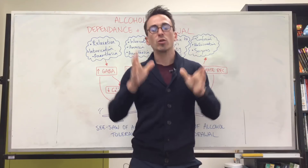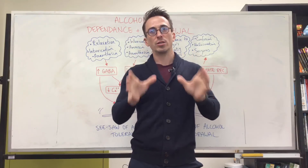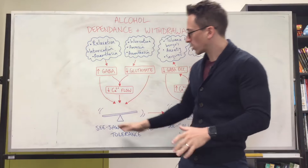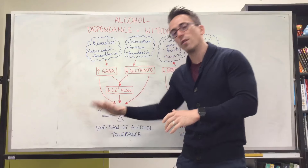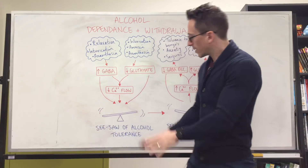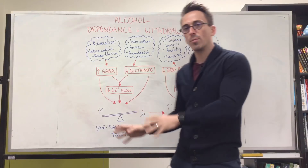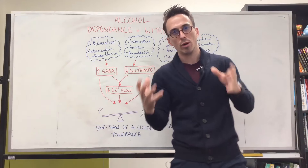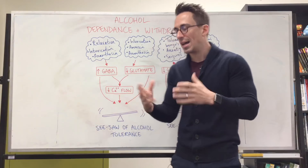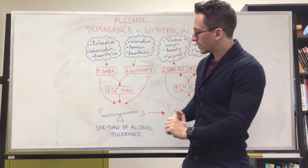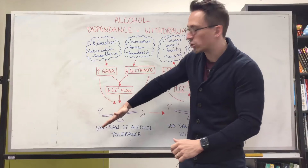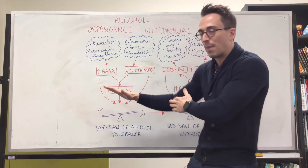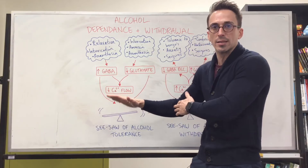Now let's talk about what alcohol does to our body. What I've drawn up here is something called the seesaw of alcohol tolerance. Basically the seesaw is homeostasis — this is balance within the body. And as we know, if something were to tip the seesaw, our body needs to try and bring it back into balance.